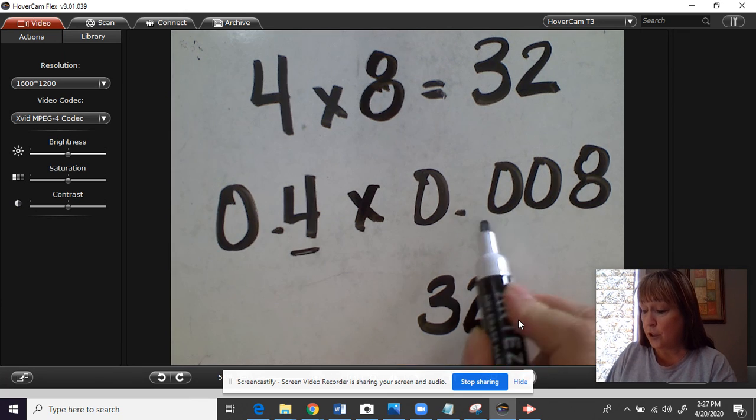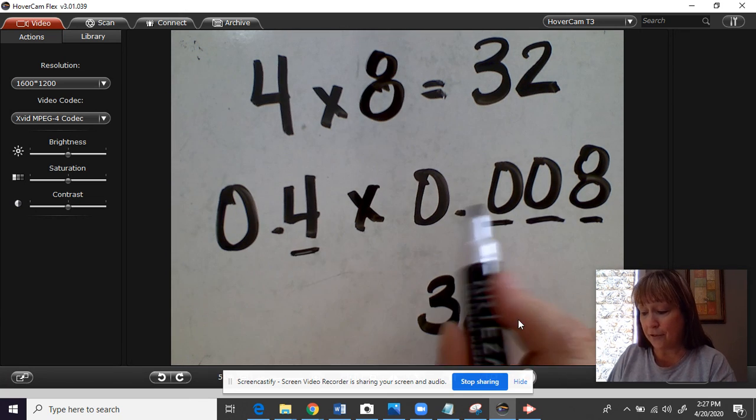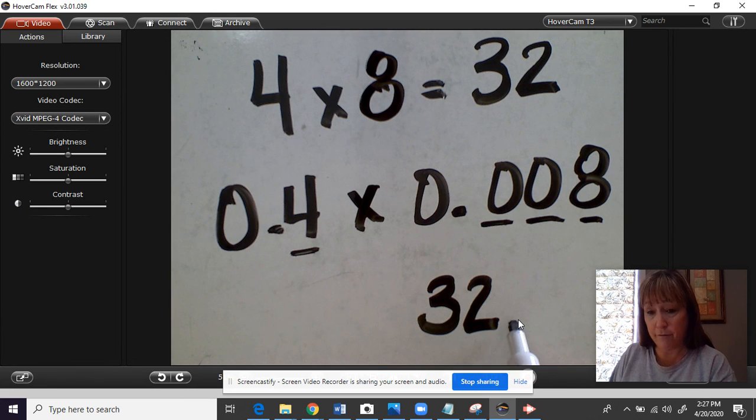which is 1, 2, 3, 4. So we have 4 numbers after the decimal. So we have to move our decimal 4 places to the left.